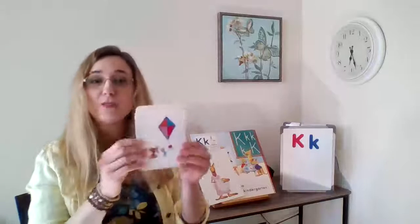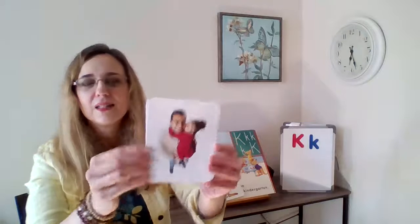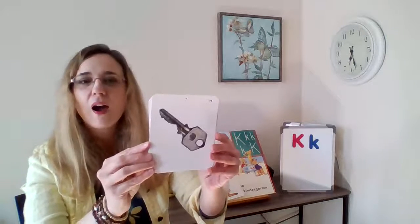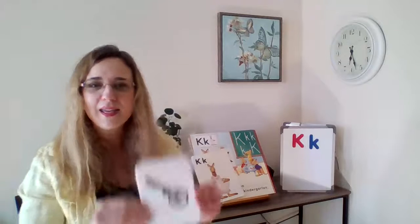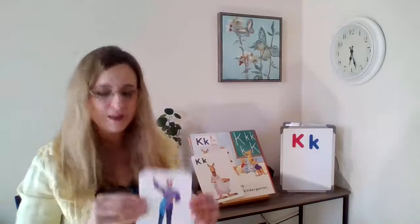We did all of those K words. Kindergarten is also a word that starts with K. We'll be reading a book about kindergarten today — if you haven't done it already, you can do it after this one. K is for kite. K is for kitchen. K is for kiss. K is for key. K is for king. Kangaroo.